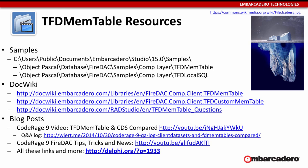George asks: how do you use TFDMemTable in a DataSnap application? The DataSnap dataset adapter points to it and pulls data from DataSnap into the FDMemTable, and you work with it from there. Just use TFDMemTable like you would use TClientDataSet — simply replace it. It works great.